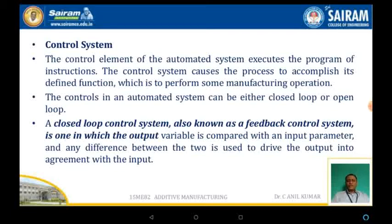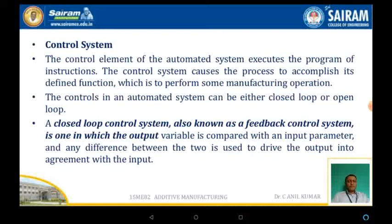The control systems are the elements of the automated system to execute the program instructions or even the work cycle. The control systems cause the process to accomplish its definite or predefined functions. Control systems are also of two types: one is the open loop control system, and the other one is the closed loop system. Normally, the closed loop control systems are also called feedback control systems.